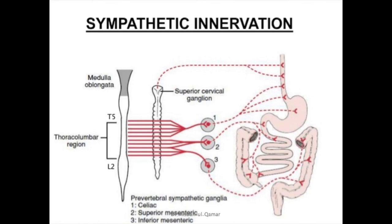The sympathetic nerve supply to the gut is mainly a thoracolumbar discharge. These fibers originate from T5 to L2 segments of the spinal cord. When they leave the spinal cord, they enter the sympathetic chains lateral to the spinal cord and to ganglia such as the celiac and mesenteric ganglia, and the post-ganglionic fibers from there supply all the gut.